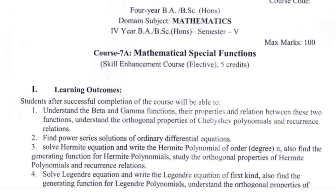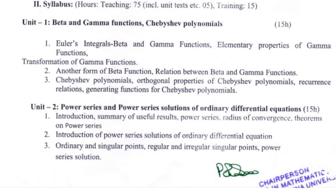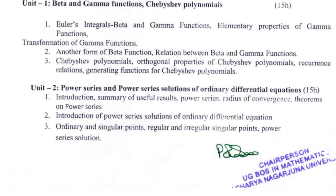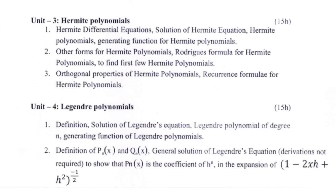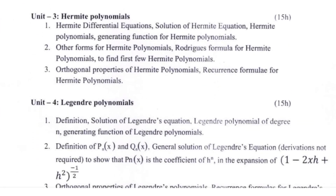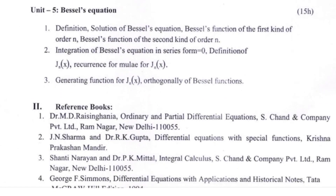Now, Paper 7a, paper title: Mathematical Special Functions. Unit 1 covers beta and gamma functions, and Chebyshev polynomials. Unit 2 covers power series and power series solutions of ordinary differential equations. Unit 3 covers Hermite polynomials and Lagrange polynomials. Unit 5 covers Bessel's equation.